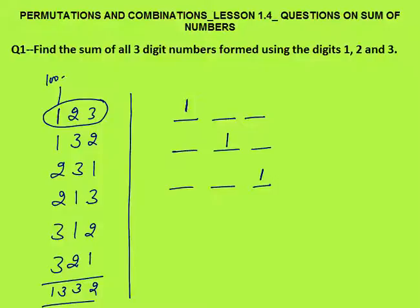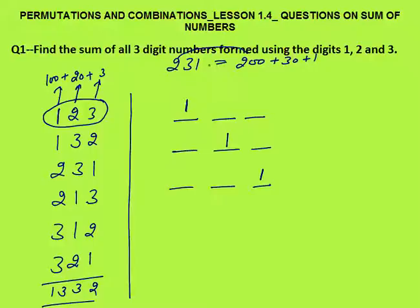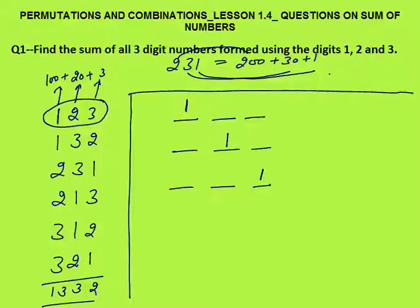For example, in the number 123, the contribution of 1 is 100, 2 is 20, and 3 is 3. In 231, the contribution of 2 is 200, contribution of 3 is 30, contribution of 1 is 1. The digit's contribution depends on its place value position.